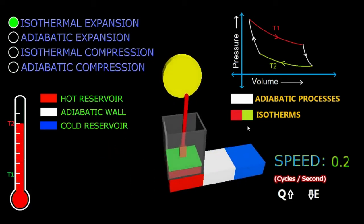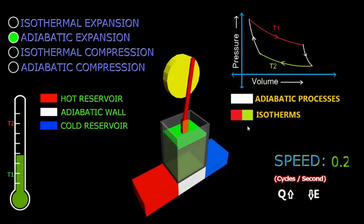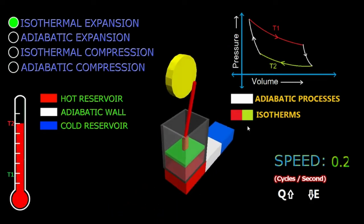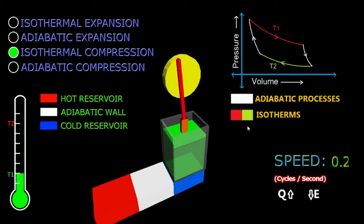To the right side of the temperature you can see a small index which gives information about the slabs beneath the cylinder: the hot reservoir, the adiabatic wall, and the cold reservoir.